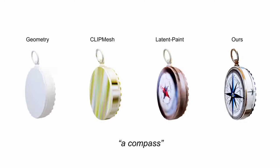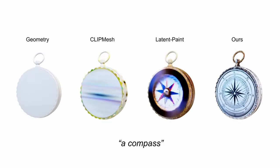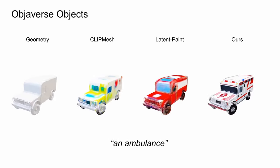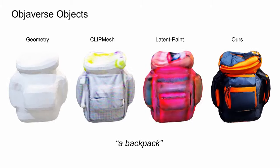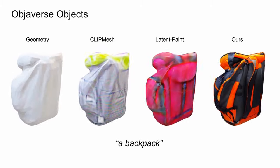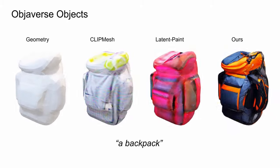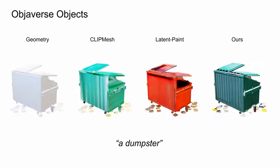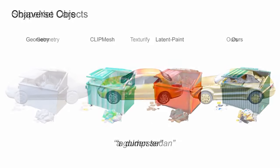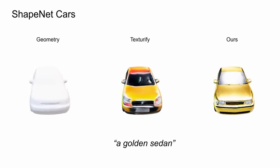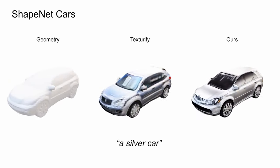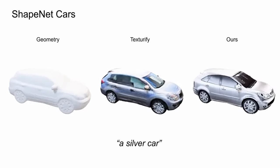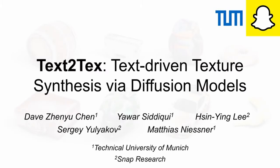In comparison to previous text-driven methods, our method generates more consistent and detailed textures on objects from the Objaverse 3D dataset. We also show high-quality texture generation for ShapeNet objects. For more details, please refer to the paper.